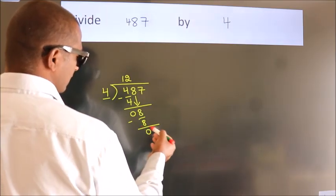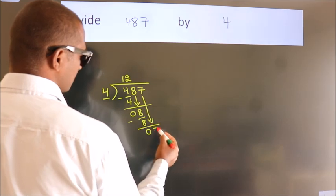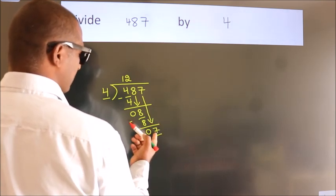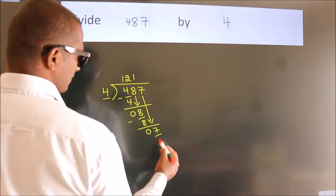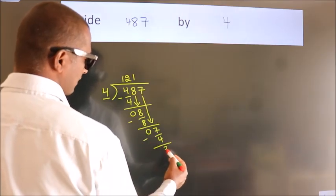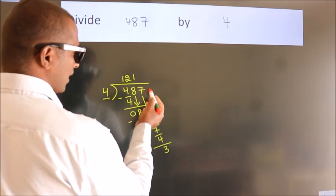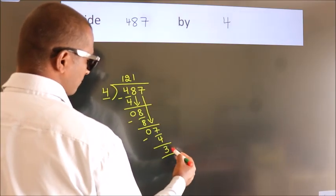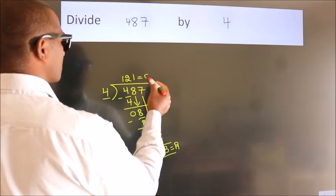After this, bring down the beside number — so 7 down, so 7. A number close to 7 in the 4 table is 4 once, which is 4. Now we subtract, we get 3. After this, there are no more numbers to bring down, so we stop here. This is our remainder. This is our quotient.